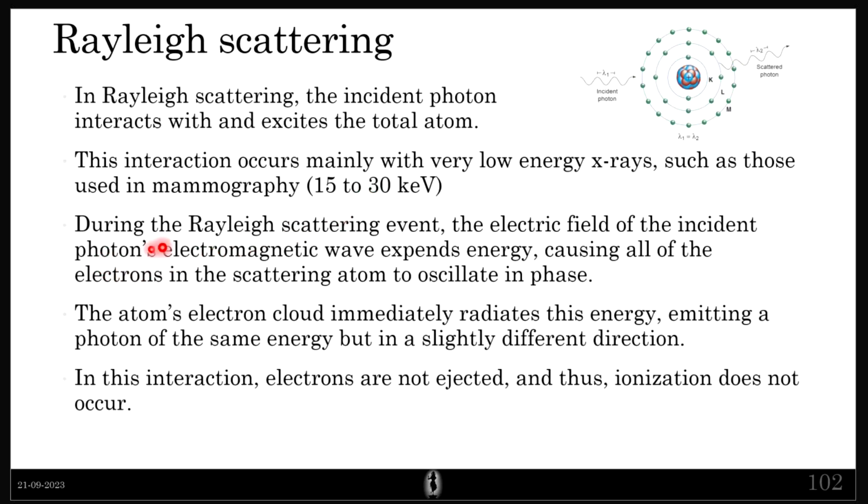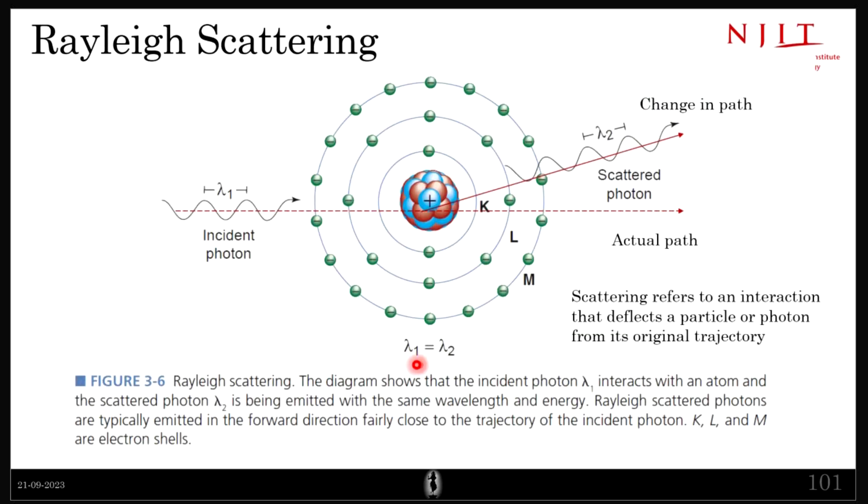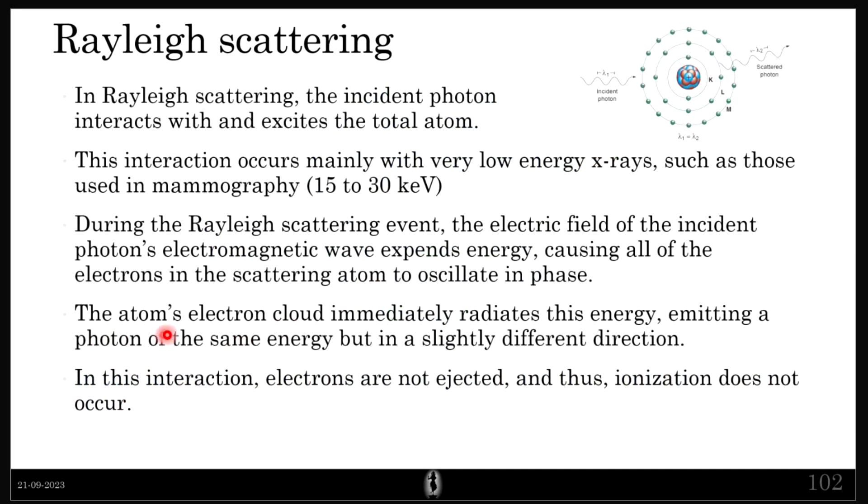During the Rayleigh scattering event, the electric field of the incident photon's electromagnetic wave expands energy causing all of the electrons in the scattering atom to oscillate in phase. All these electrons start oscillating in phase and slowly that energy is dissipated again in terms of an x-ray. If you notice lambda 1 equals lambda 2. The energy with which the x-ray entered the atom is the same with which it will exit the atom. There is no ionization, there is no energy change. The atom's electron cloud immediately radiates this energy emitting a photon of same energy but in a slightly different direction.